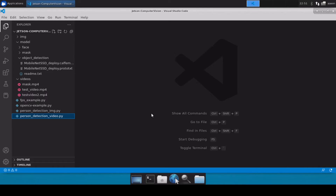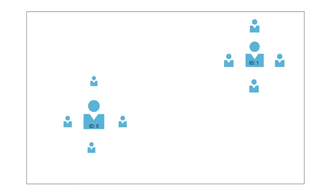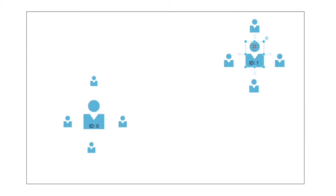Let's quickly understand how this tracking algorithm works. Let's assume this is a frame — an image file — and let's say this is a person detected using our person detection model, and this is another person the model has detected. So there are two persons in this image. What the tracker does is: when we detect any object, a person or anything, we pass the coordinates of that particular object to the tracker, and then the tracker keeps a record of those coordinates.